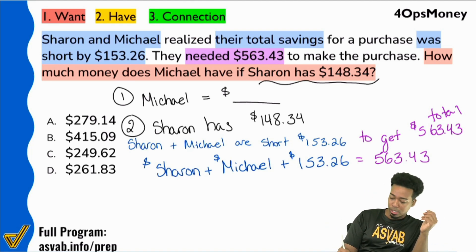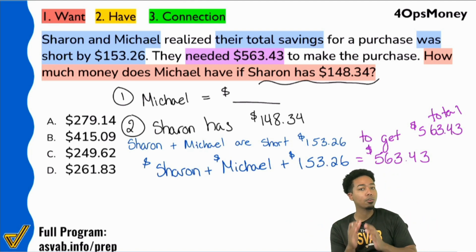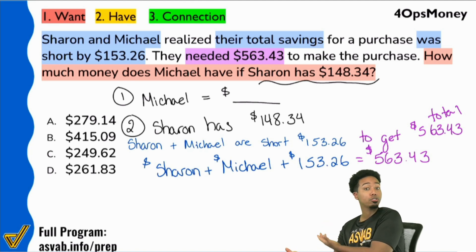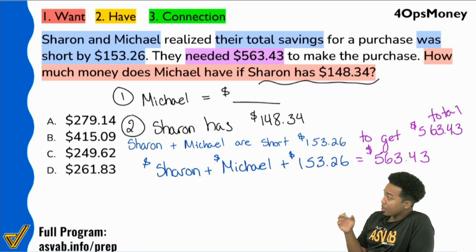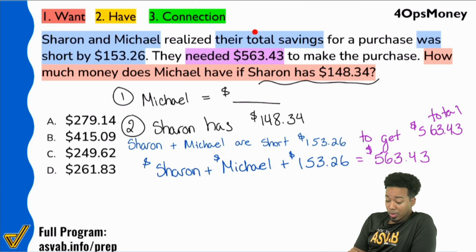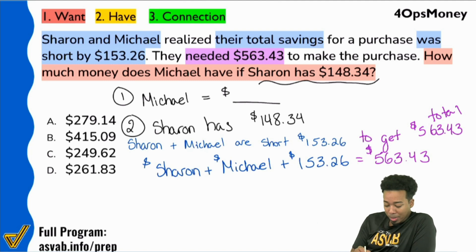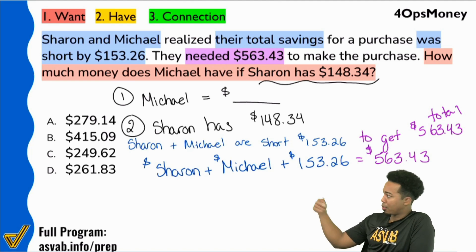This is not the only way you can set this problem up. As long as you're writing a truthful mathematical sentence or equation, you're fine. Let's go over the logic one more time. Reading the story: Sharon and Michael realize that their total savings — what they have together — was short by this amount. Sharon plus Michael plus this much is what they need. They don't have the $153.26, but if they did, Sharon, Michael, and that $153 makes up a total of $563 for whatever they're trying to buy.